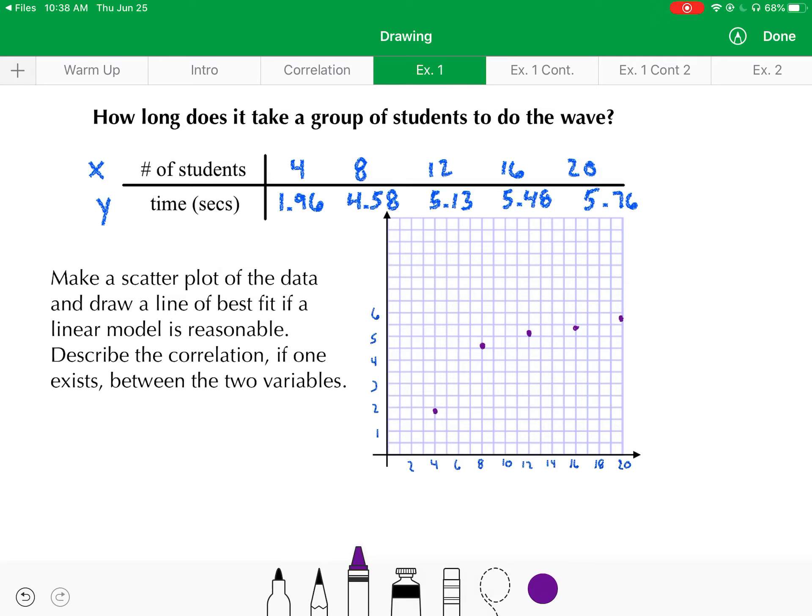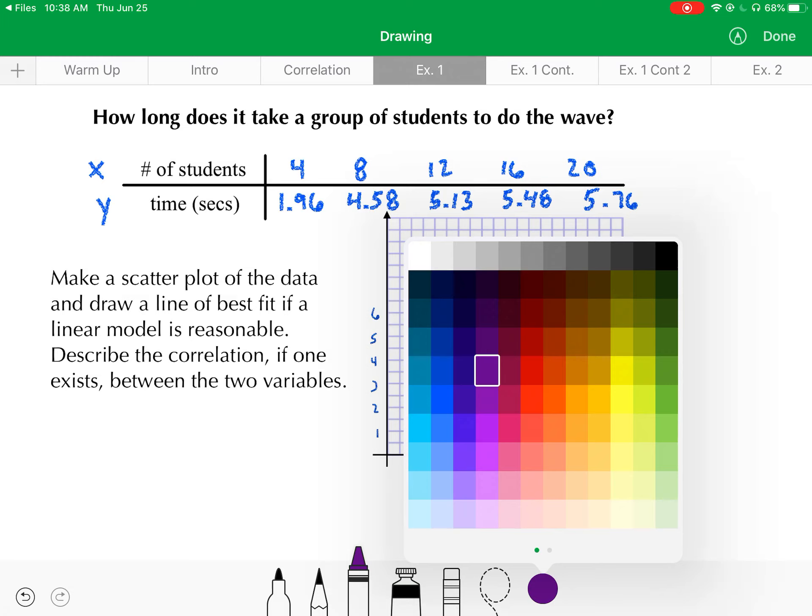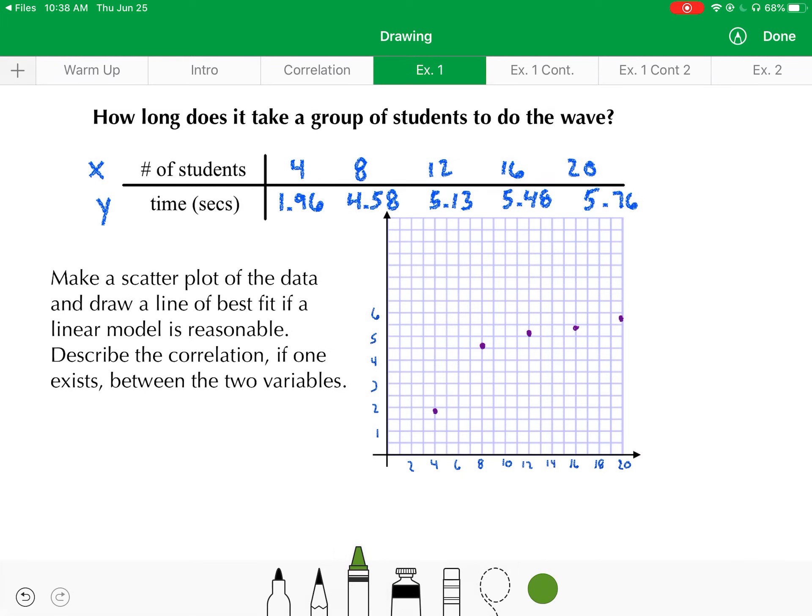You can see that that initial point of 4, 1.96, it's kind of an outlier to this data set, but the other four points seem to have a pretty good linear trend to them. So I would say a linear model is reasonable here, and we're just going to kind of eyeball our line of best fit, probably something in this range.